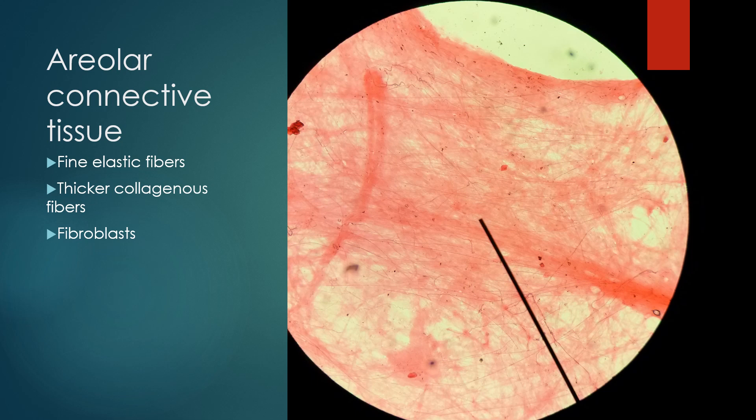Number eight was areolar connective tissue. These very fine fibers are the elastic fibers, and they'll be kind of chaotically arranged rather randomly. Then the thicker fibers that you see are going to be collagen fibers. The cells, if you see cells, they're going to be fibroblasts.